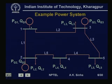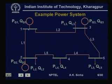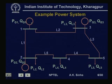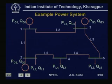The mechanical input to the generator remains the same as before the fault, while the electrical output has dropped to zero. The large mechanical input with zero electrical output means the rotating mass of the synchronous machine accelerates, causing the rotor angle δ to keep increasing.